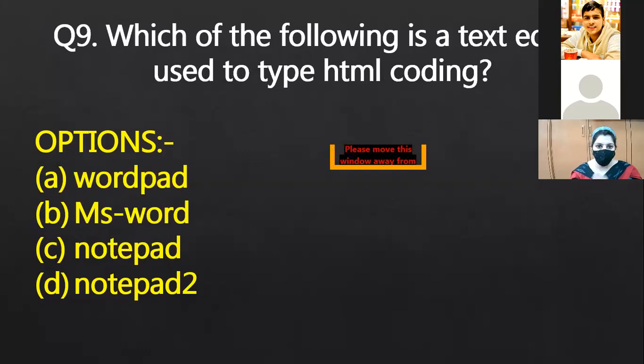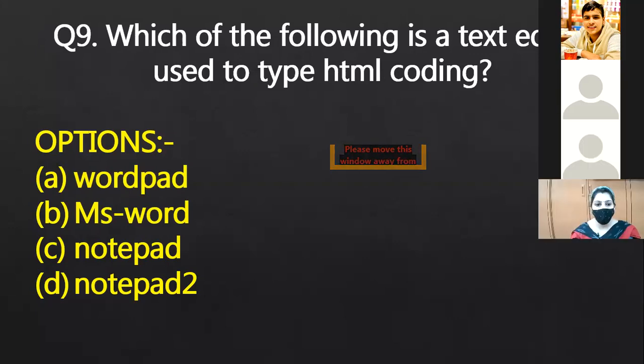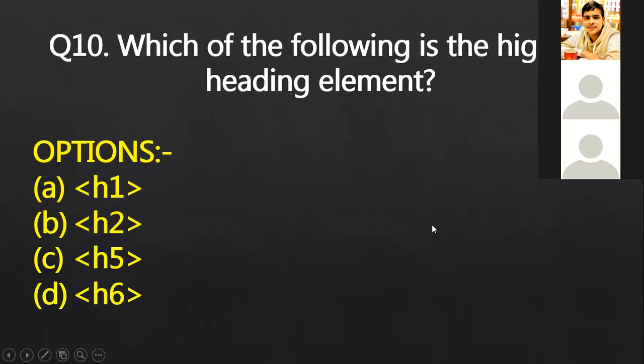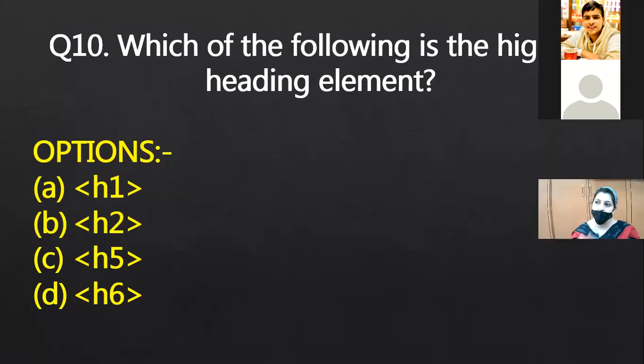Which of the following is a text editor used to type html coding? Text editor used to type html coding. Notepad and Notepad++ is also the text editor. Wordpad me bhi coding ho jati hai. MS word me bhi ho jati hai. You have to save as a text editor. So HTML document create ho jayega.